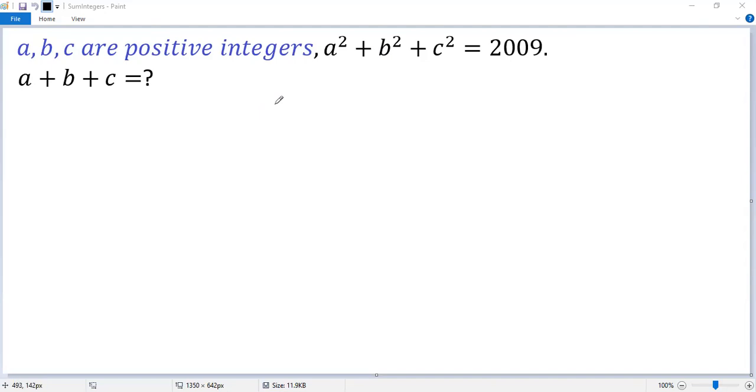We know a, b, c are positive integers. The sum a² + b² + c² equals 2009. We need to figure out the sum of a, b, and c.